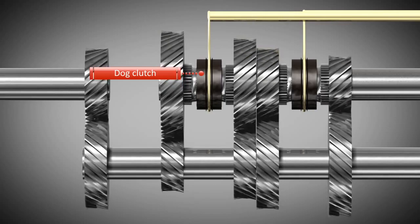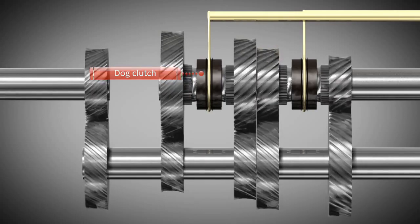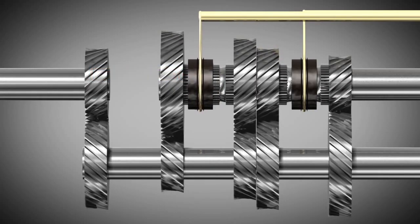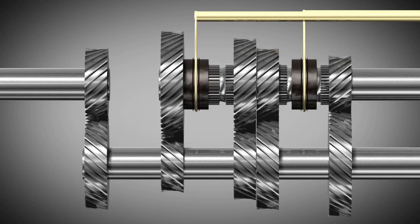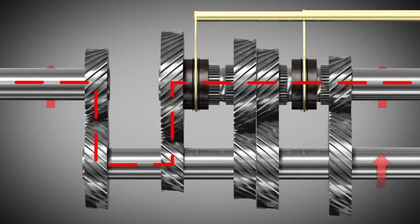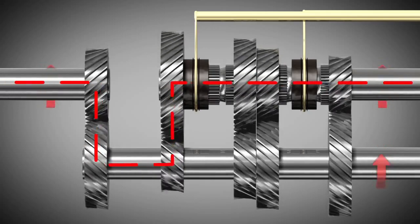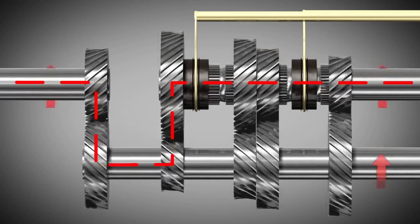To shift from neutral into first gear, a part of the dog clutch slides sideways. But first, the friction clutch has to be disengaged so that the engine does not transfer the mechanical energy produced to the transmission. The friction clutch can be engaged by the driver as soon as the dog clutch is fully engaged.